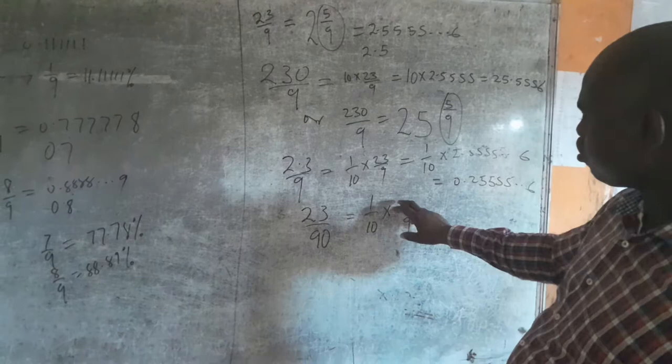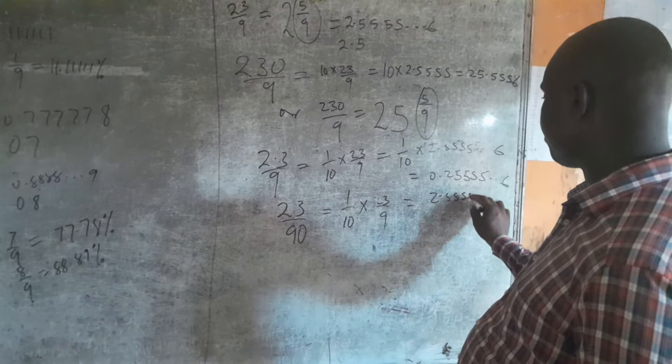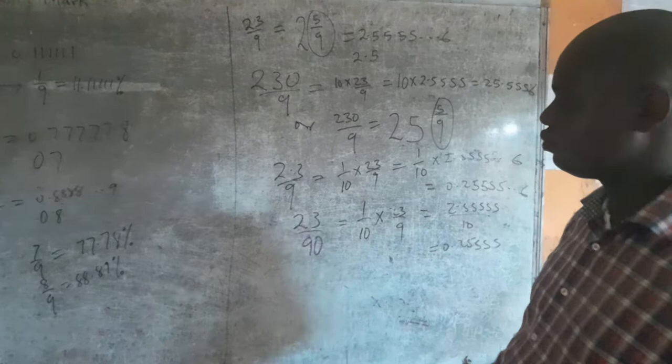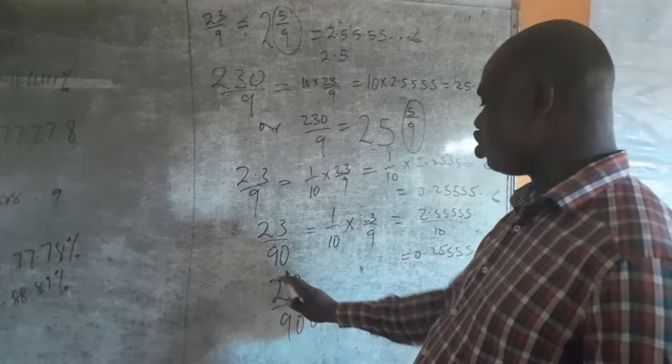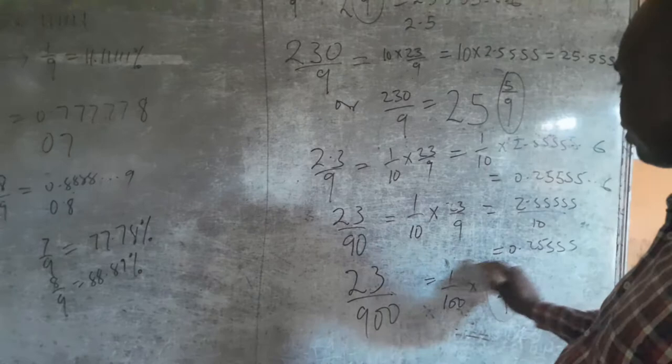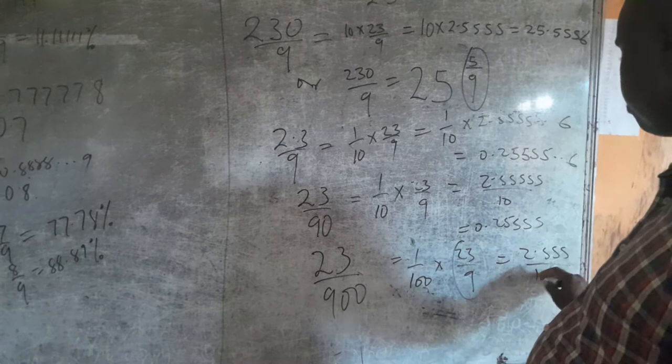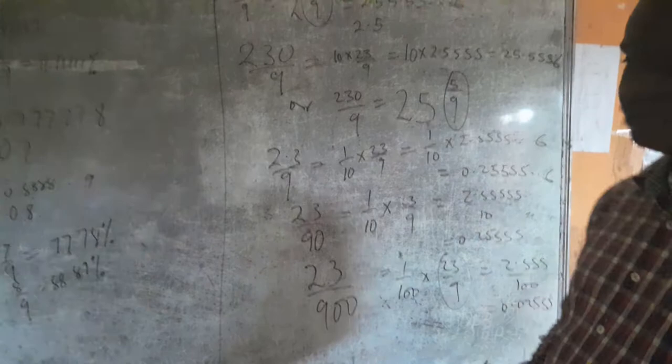So that still gives you 2.555/10, which gives 0.2555. If I have 23/900, that's 23/9 divided by 100. I know 23/9 already, so I'll just divide 2.555 by 100, giving me 0.02555.